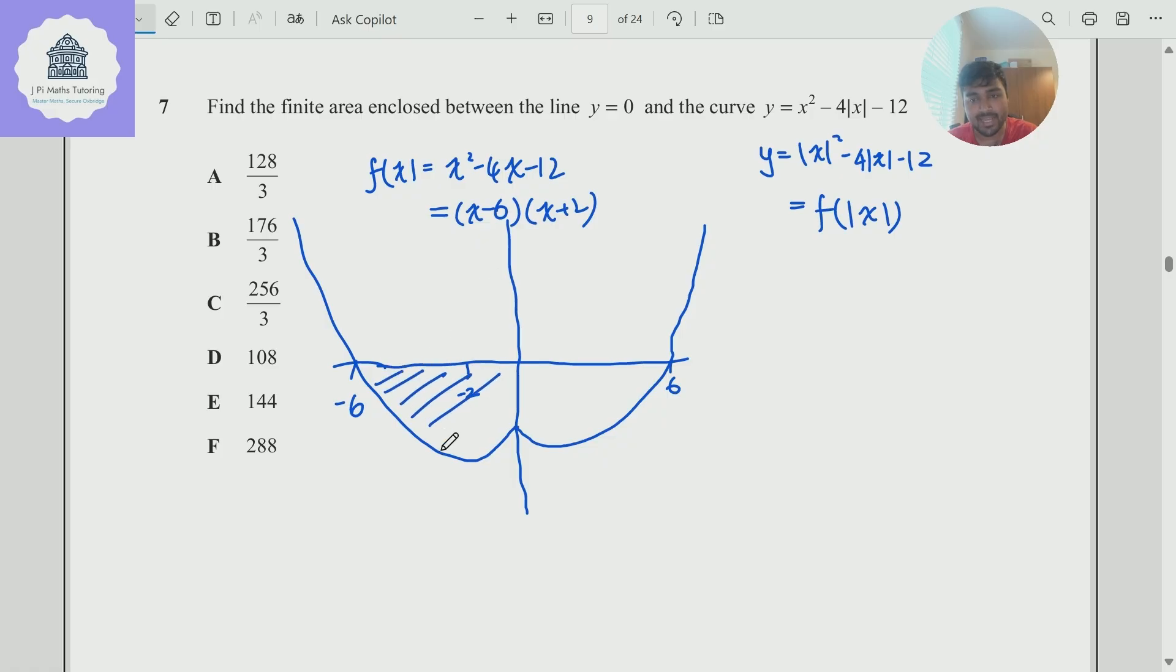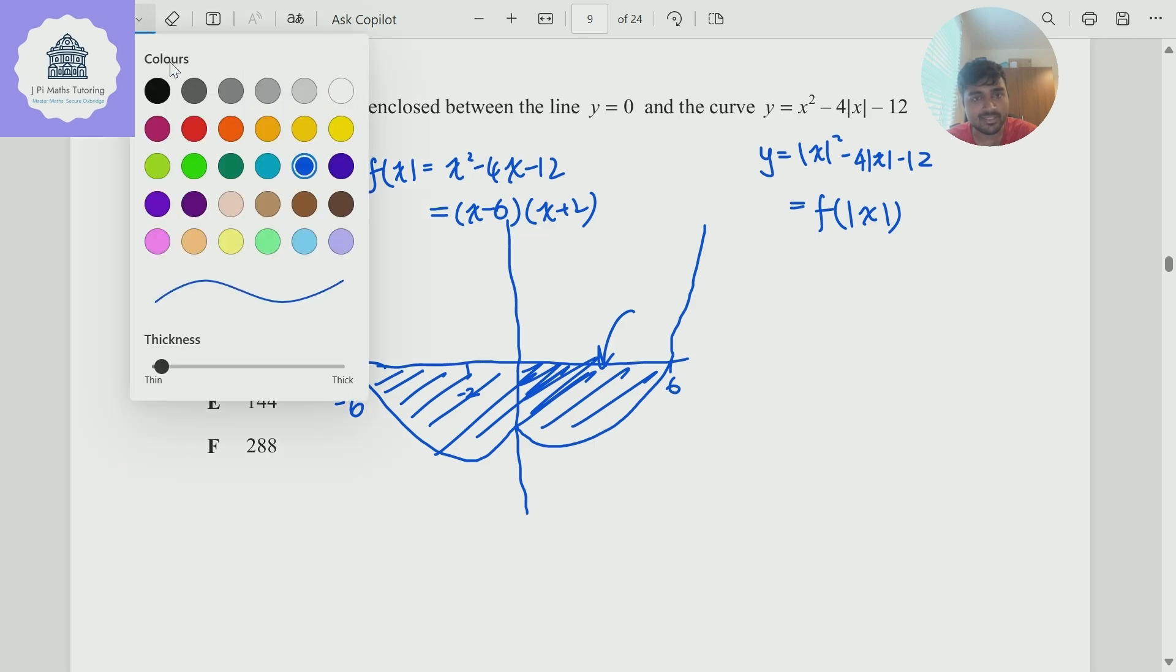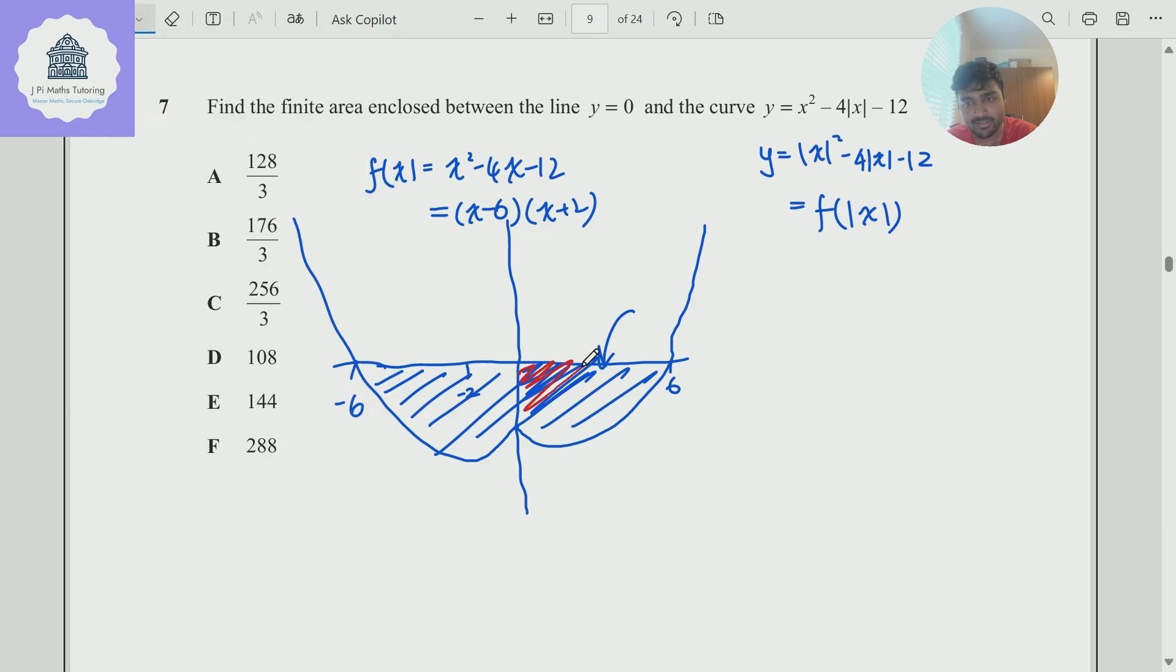And so we're interested in that area there. And we want to work out what that area is. And just by symmetry, it's going to be double the area that we have. Let me use a different color here. It's going to be double this red area here.